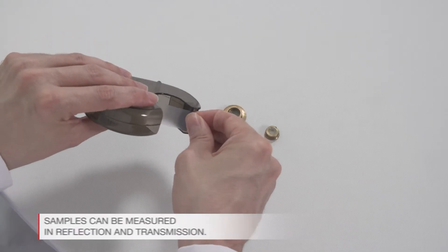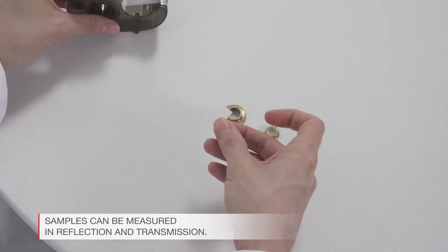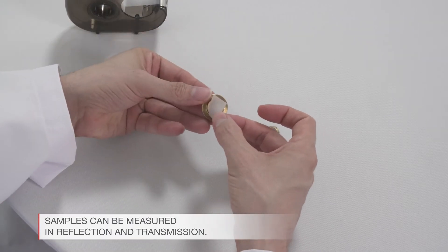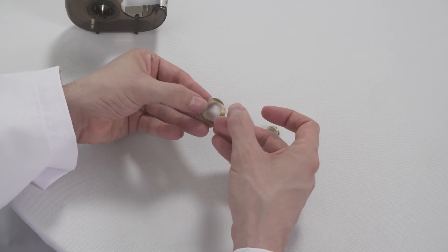Samples can be measured in reflection and transmission. Transmission measurements can reduce preferred orientation effects and produce more accurate peak intensities.